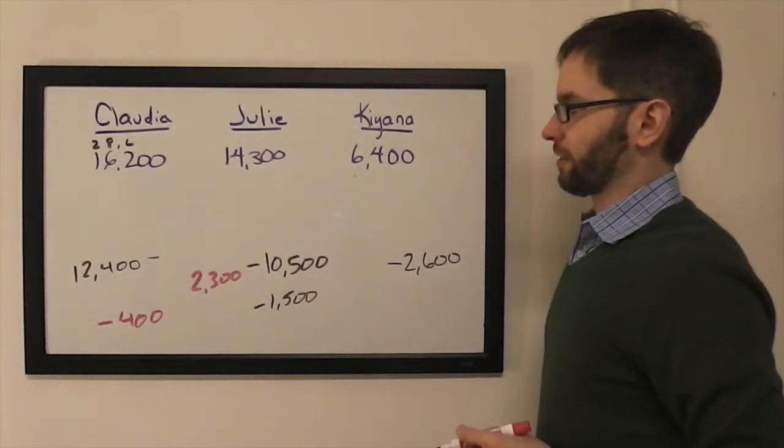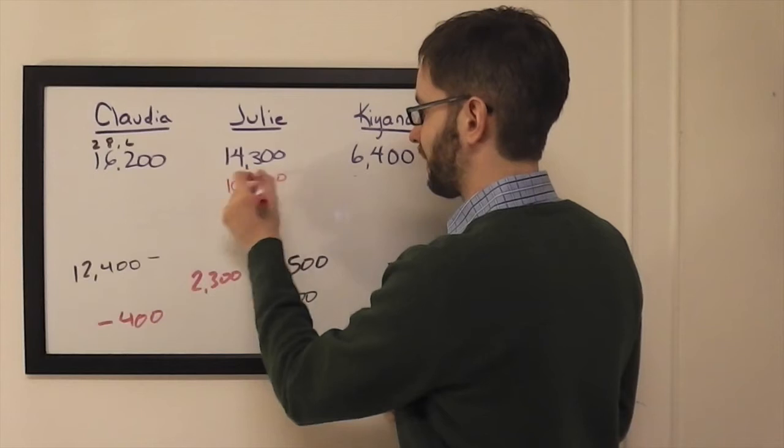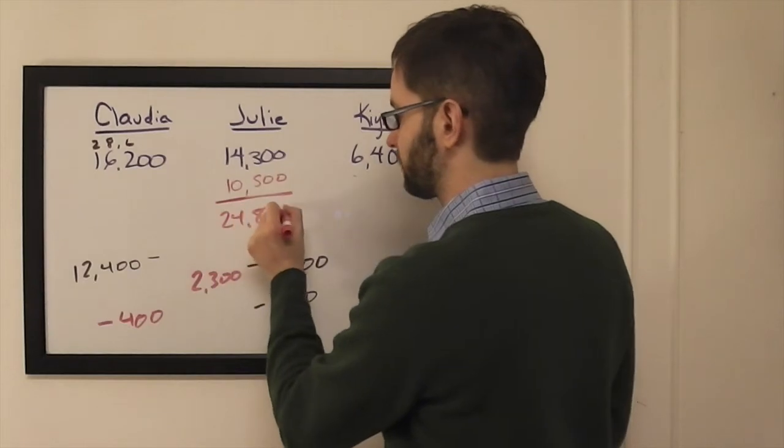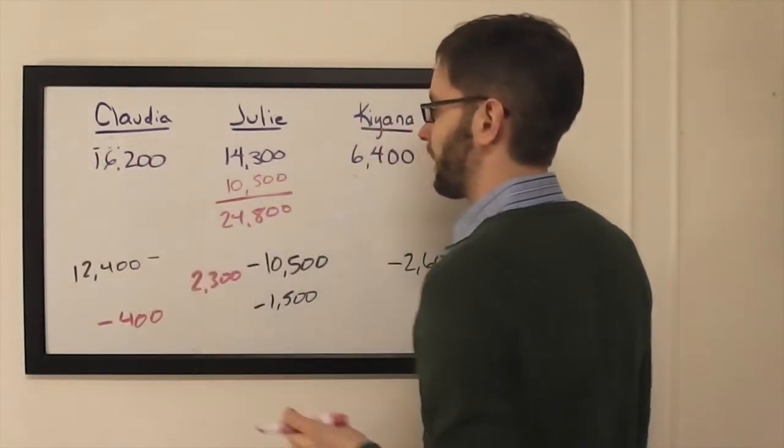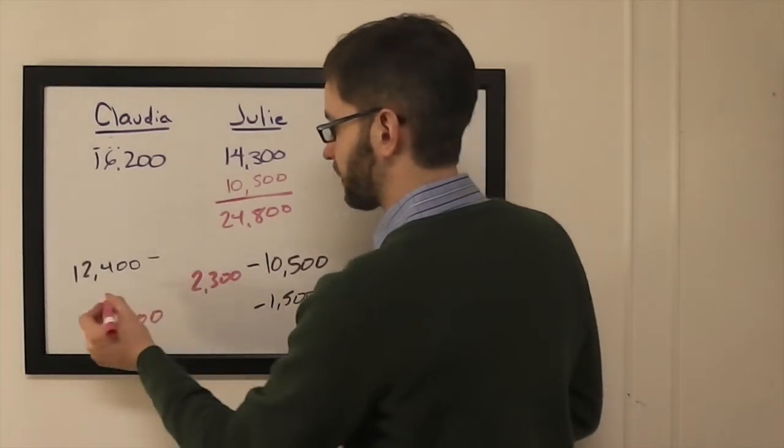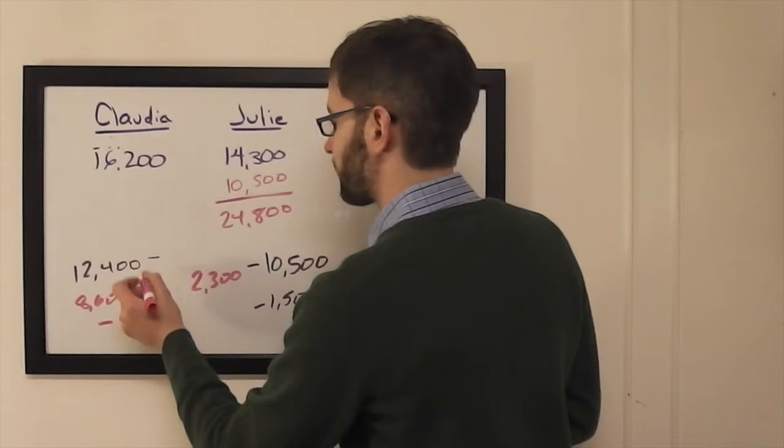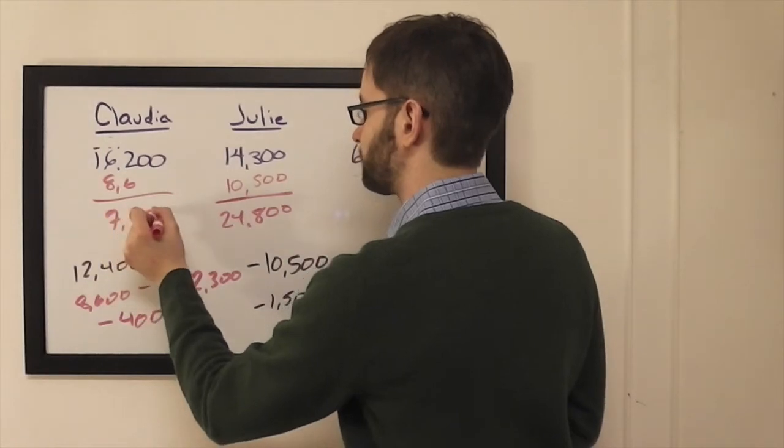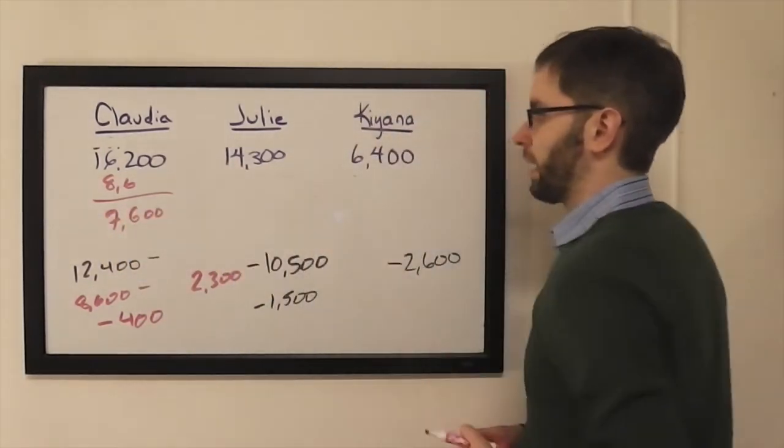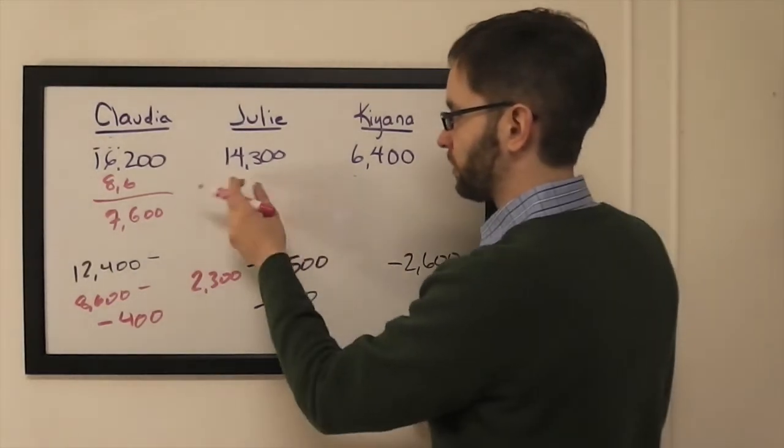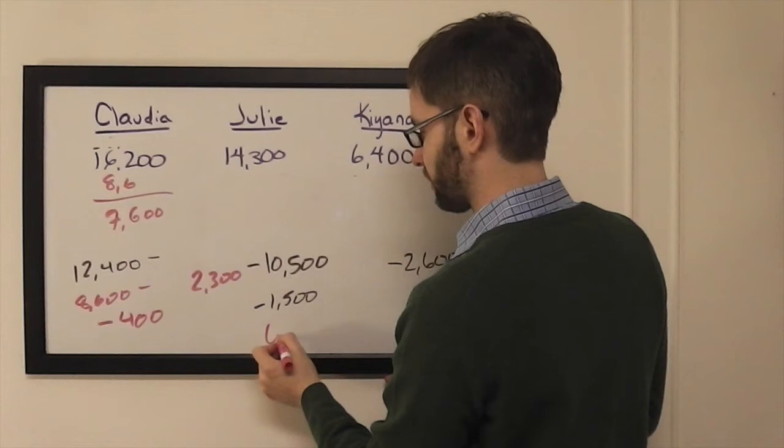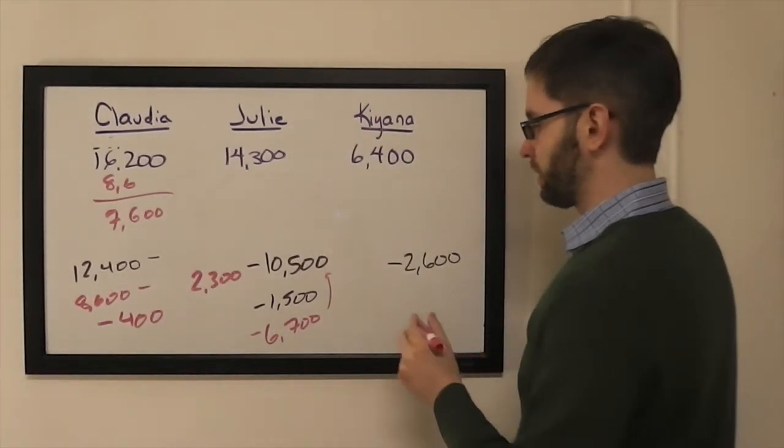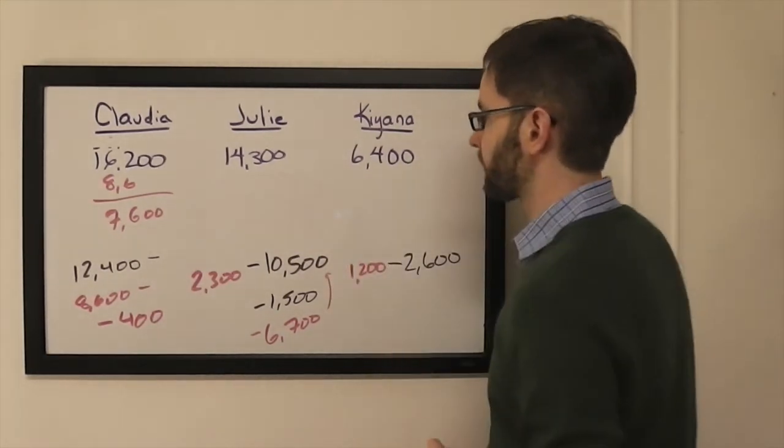If Julie goes for this 10,500 amount, I think that Claudia and Julie are too close for this to make sense for Claudia. 24,800, she would have to wager 8,600. So I'll put this down here. I don't really like it. But if she's wrong with that wager, she's going to be left with 7,600. So Julie would have to wager at most 7,600. So we'll cap it there. And Kiana would have to wager at least 1,200. So I'll put that as a minimum for her.